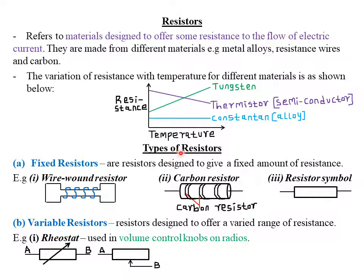We have basically three types of resistors. One is what we call fixed resistors. These are resistors which are designed to give a fixed amount of resistance — for example, if it is designed to give only 20 ohm resistance, that is the only amount of resistance it can offer. Examples of fixed resistors include a wire wound resistor and carbon resistors, which are usually common in radios. In an electrical circuit, there is a symbol we use to denote a fixed resistor.